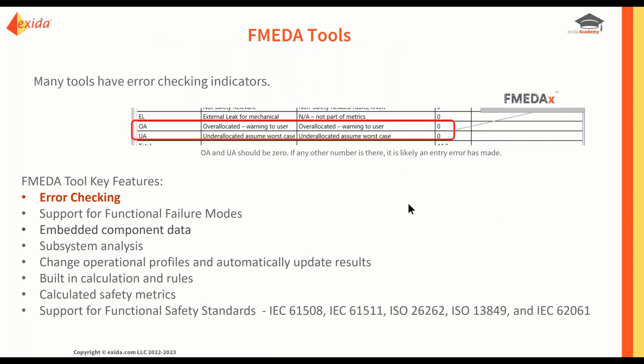Don't forget that your tools have error checking built into them. A good tool has a number of error checking methods, like these lines in the results from FMEDAX — over-allocated and under-allocated should be zero. If any other number appears there, an error has been made.